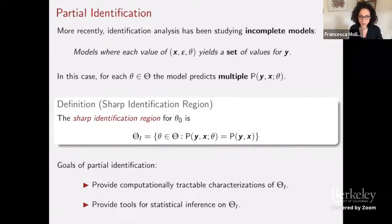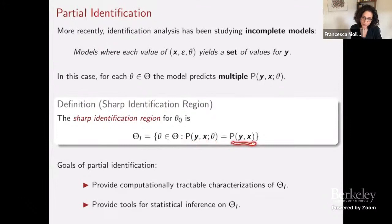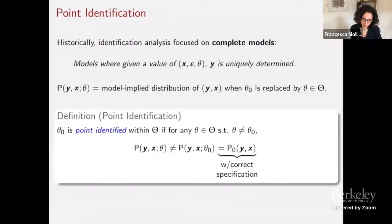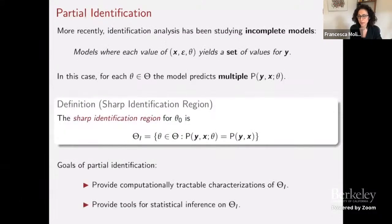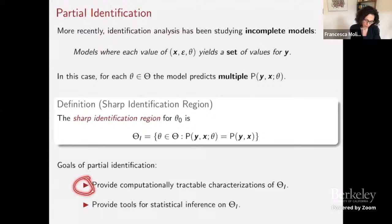We cannot obtain point identification of the true value theta zero, but we can still learn something quite useful: a set of observational equivalent parameter vectors. That set is what I'll refer to as the sharp identification region for theta zero, denoted theta_I. It is comprised of parameters theta such that when you plug them into the model, you obtain a joint distribution for y and x that matches the one observed in the data. The goals of partial identification analysis are to provide computationally tractable characterization of this set and tools for statistical inference on it.